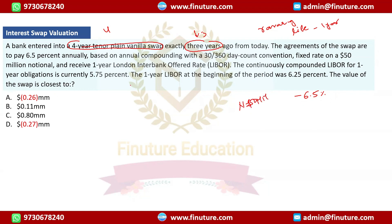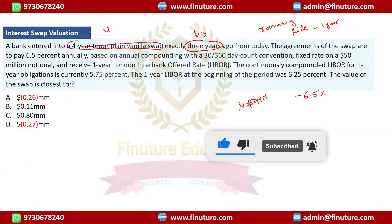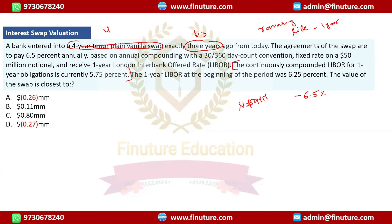The bank is paying 6.5% and receiving the one-year LIBOR. The continuously compounded LIBOR for one year is currently given as the discount rate — be very careful about this. The one-year LIBOR at the beginning of the one period, when the reset was done, was 6.25%. So basically: you are paying the fixed rate (outflow) and receiving the floating rate (inflow), which is one-year LIBOR.